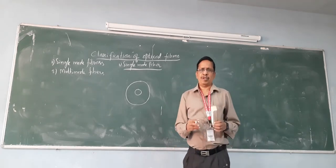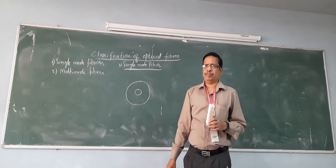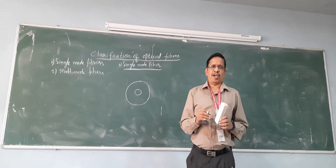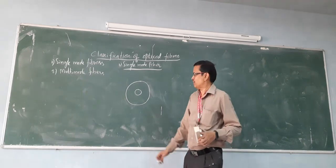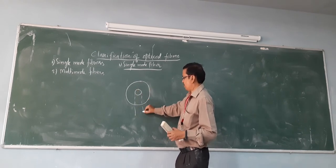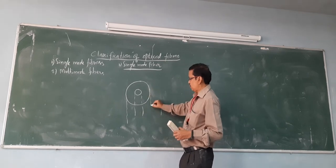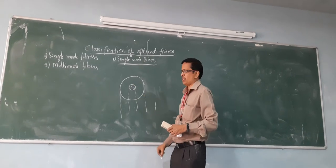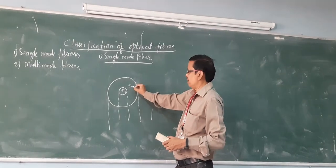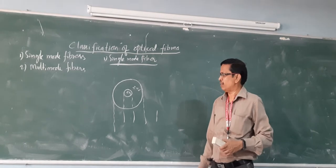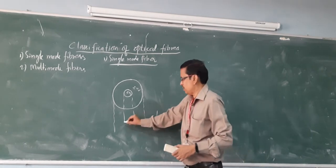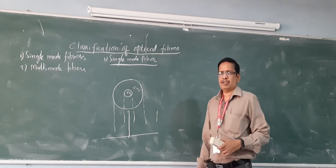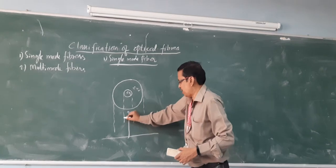All fibers are distinguished by a parameter called the index profile. This index profile is simply a graph drawn between refractive index on the y-axis and the distance from the center of the core on the x-axis. For example, if you draw the index profile for this fiber, the core region has a refractive index of n1 and the cladding has a refractive index of n2.